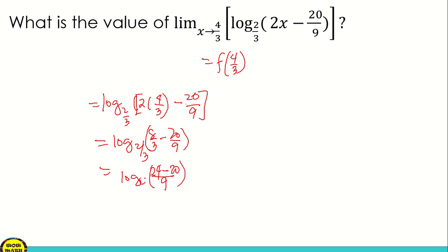With base 2/3. And then that is log base 2/3 of, so 24 minus 20, that is 4/9.